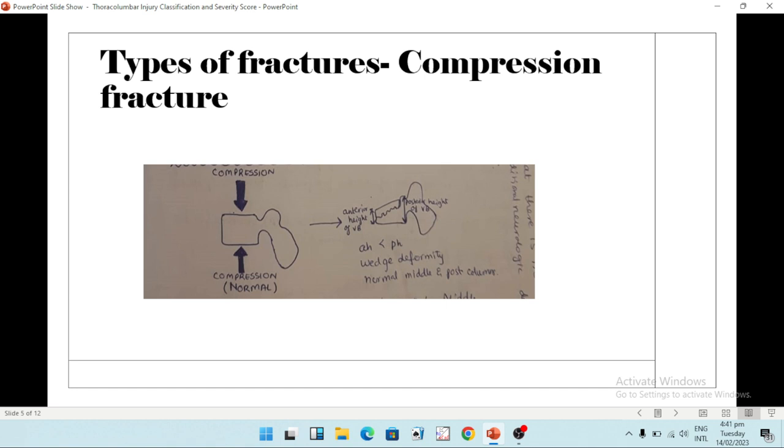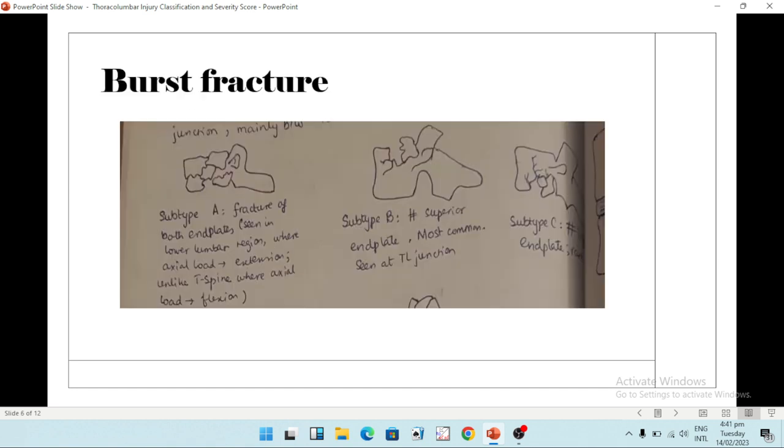Usually there is no neurological deficit associated with these fractures. Now we come to the burst fracture. The burst fracture also comes from compression of the vertebral body, but there is compression not just on the anterior column but also on the middle column. It results in five types of fractures, and they're all collectively called burst fractures. The first type is where both end plates are destroyed, fractured. In type B, only the superior end plate is fractured. And in type C, only the inferior end plate is fractured. This is very rare, but the superior end plate fractured subtype B is very common, the most common.